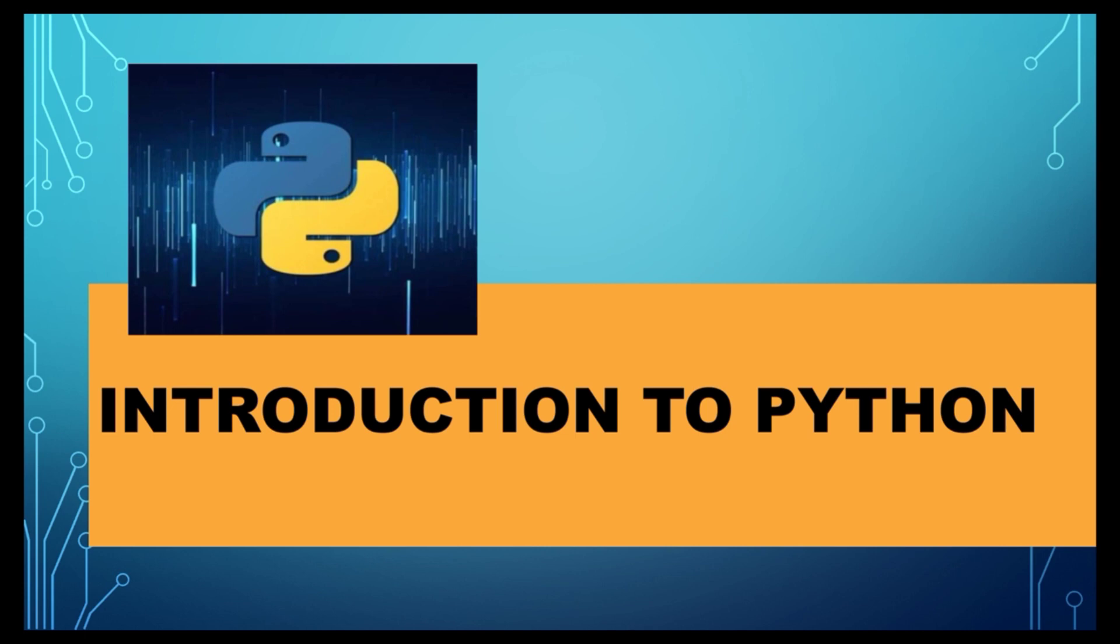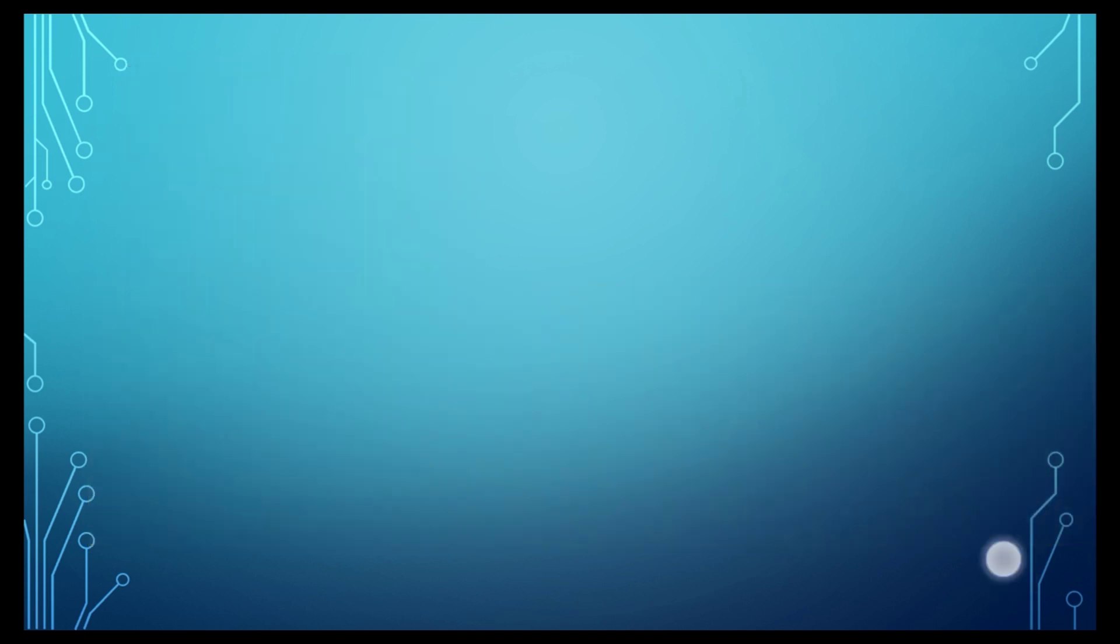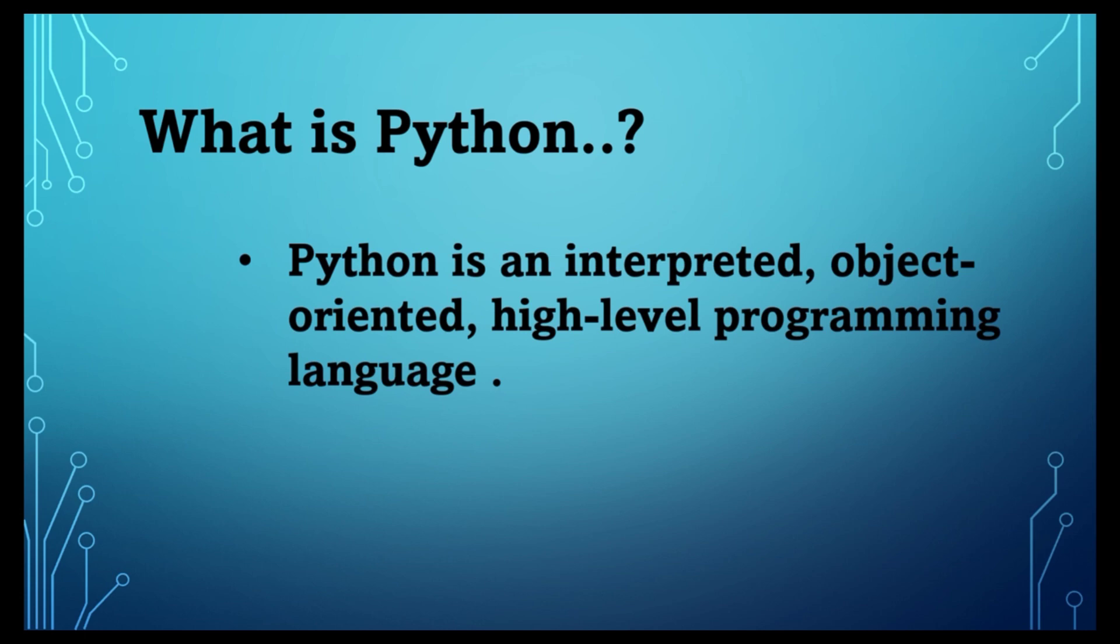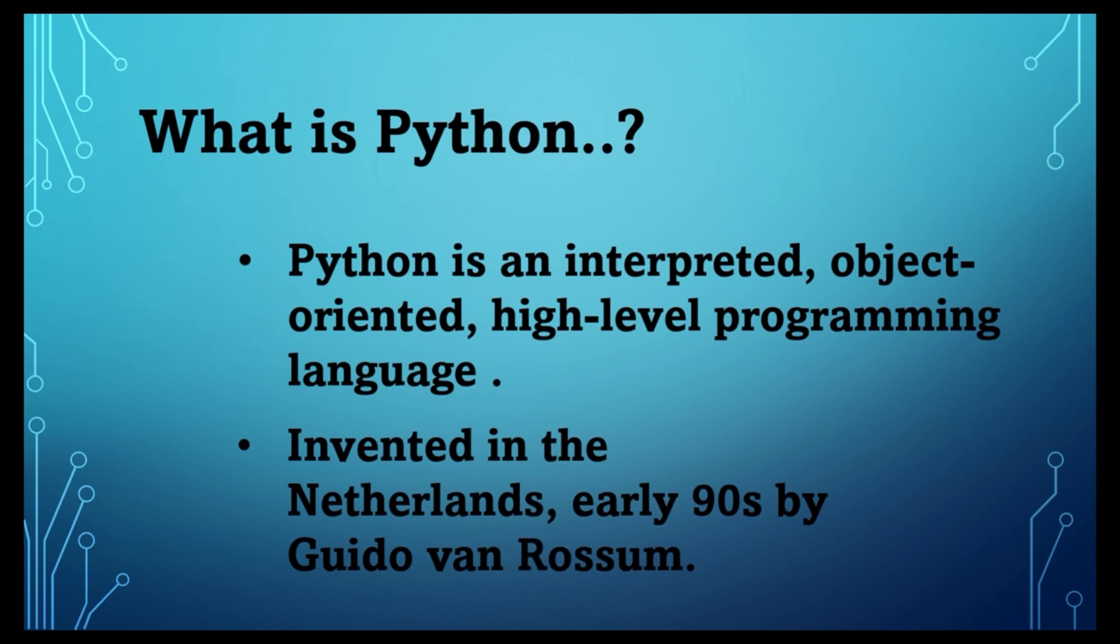What is Python? Python is an object-oriented and high-level programming language. It was created by Guido van Rossum in early 1990. It was designed to be a highly readable language.